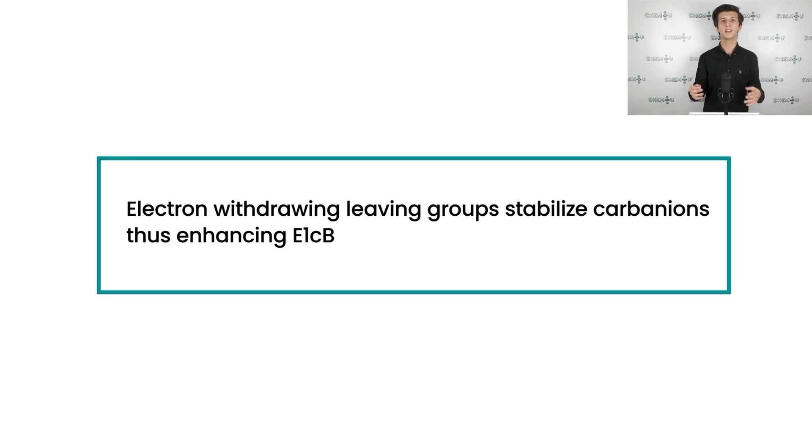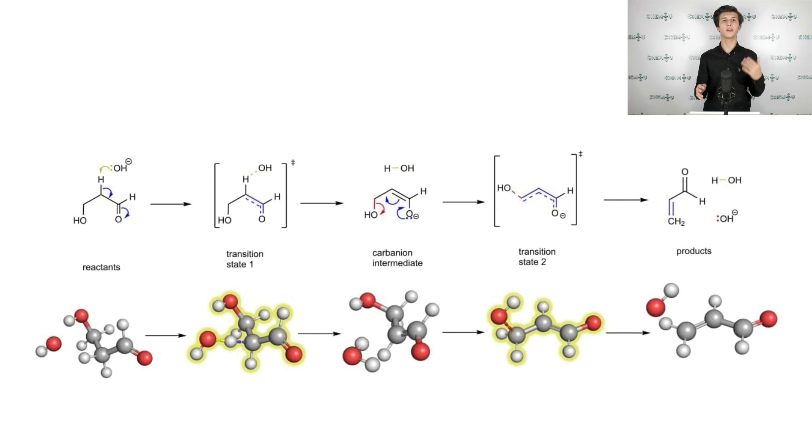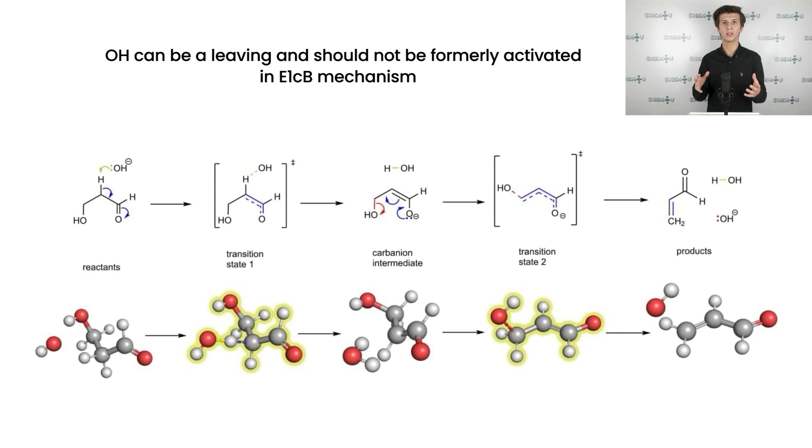We have already discussed before that E2 and E1CB mechanisms compete. Also, calculations suggest that the activation energy of E2 mechanism is generally lower than that of E1CB by 30 to 60 kilojoules per mol, which is quite a substantial amount. That is why E1CB is quite rare. Now, let us examine once again an example of E1CB mechanism, acrolein formation. It is important that in this case OH left without prior special activation, for example, tosylation or protonation. It is quite an unusual case when OH plays the role of leaving group without any activation. For instance, it does not happen in nucleophilic substitution mechanisms or in E1, E2, but in E1CB it is possible.